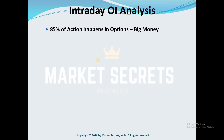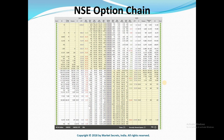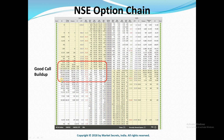The first step is to find out whether there is a call buildup happening in the option chain. This is the typical option chain data from the NSE website. To find the call buildup, you need to focus on the call side of the option chain. If you look here, there is a huge open interest in these strike prices, which indicates there is a good call buildup above 12,200, so Nifty will be struggling to break and move above 12,200.